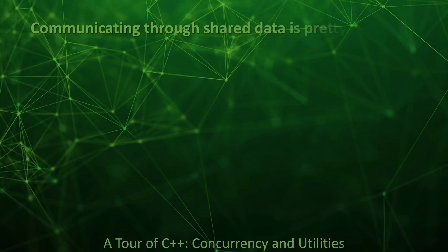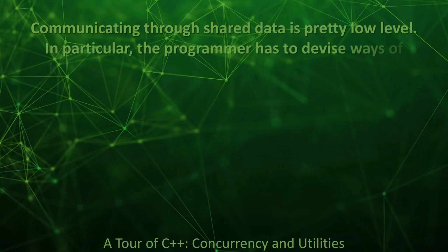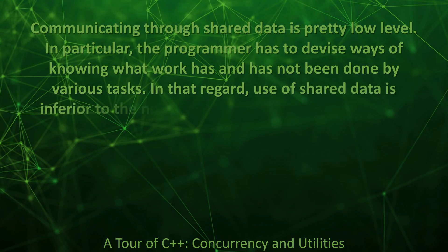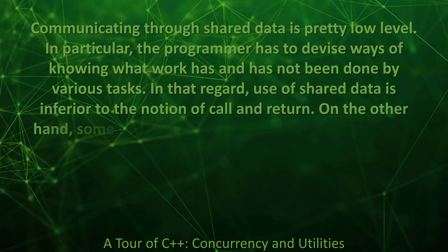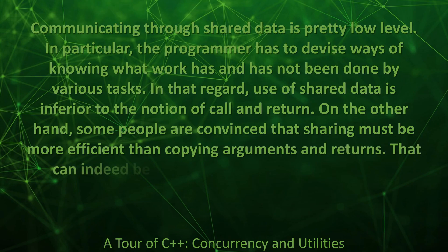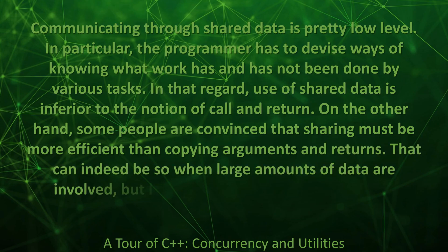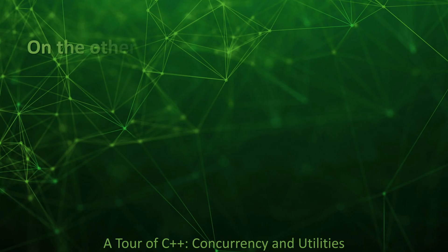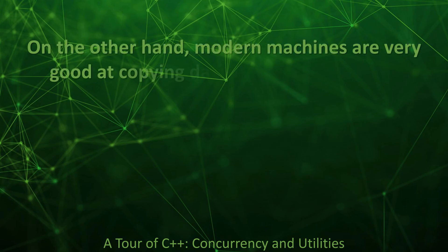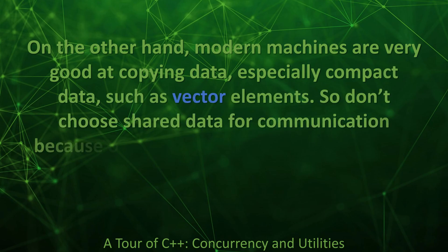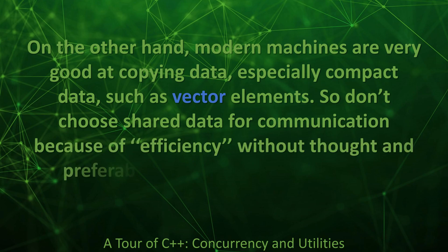Communicating through shared data is pretty low level. In particular, the programmer has to devise ways of knowing what work has and has not been done by various tasks. In that regard, use of shared data is inferior to the notion of call and return. On the other hand, some people are convinced that sharing must be more efficient than copying arguments and returns. That can indeed be so when large amounts of data are involved, but locking and unlocking are relatively expensive operations. Modern machines are very good at copying data, especially compact data such as vector elements. So don't choose shared data for communication because of efficiency without thought — and preferably not without measurement.